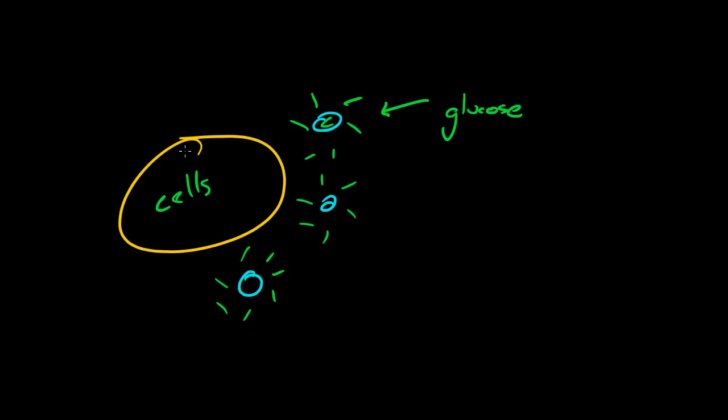Now your body needs glucose in the cells because it uses it for energy, and we're going to talk about how cells turn glucose into energy later on. But just remember that cells love glucose because that way they can use energy and also the carbon in glucose.